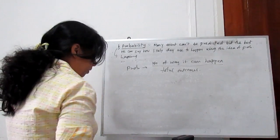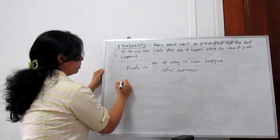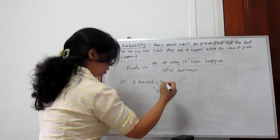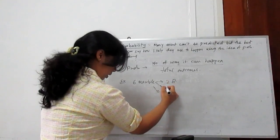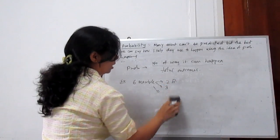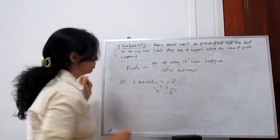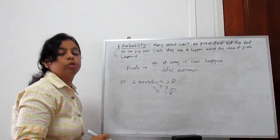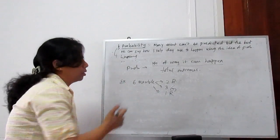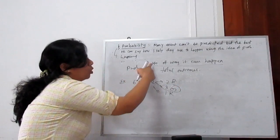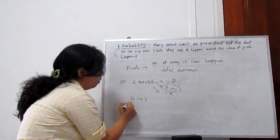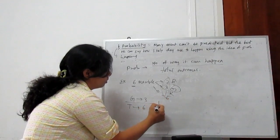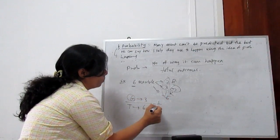For example, if we have 6 marbles in a bag with different colors — 2 are blue, 3 are green, and 1 is red — and somebody picks out only 1 single marble, what is the probability to pick a green marble? For green marble there are 3, so the number of ways it can happen for green is 3, divided by total outcome which is 6. So it is 3 by 6, meaning the probability for getting green is 1 by 2.